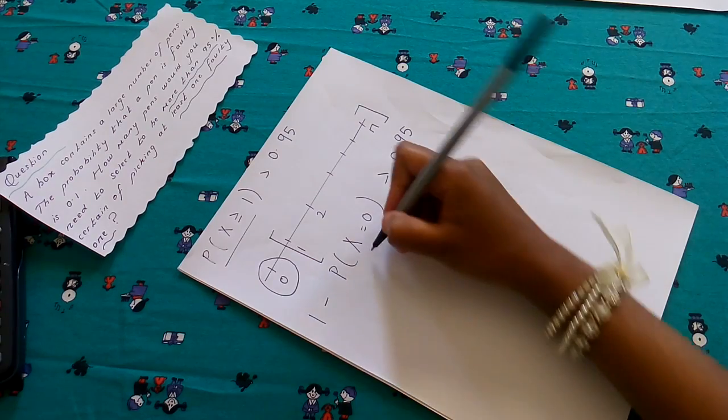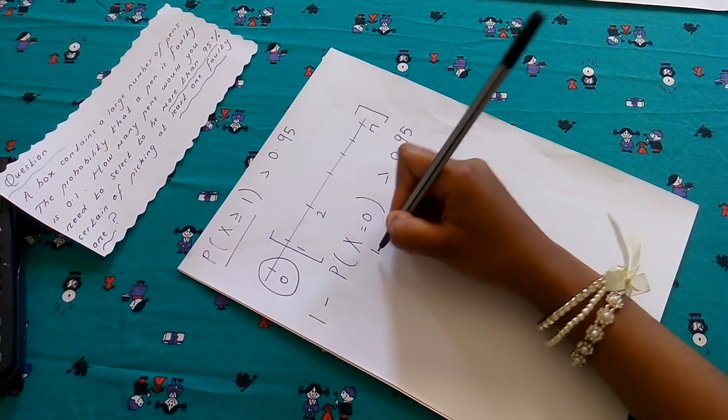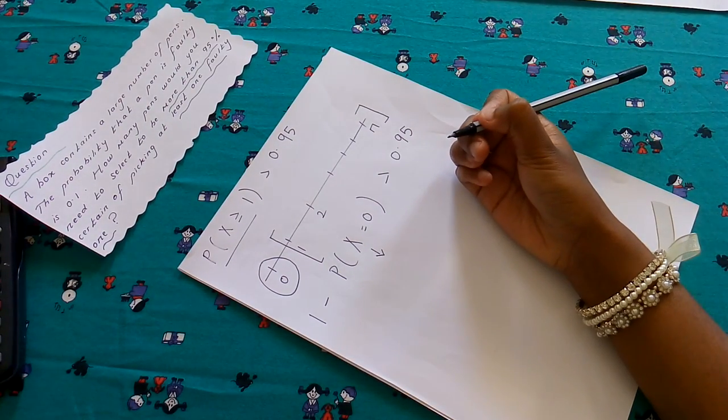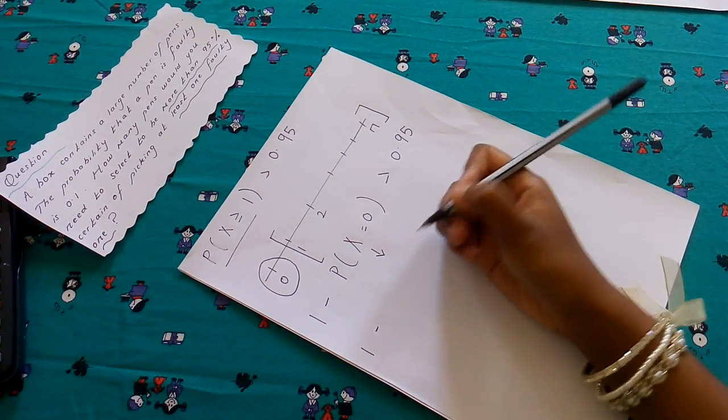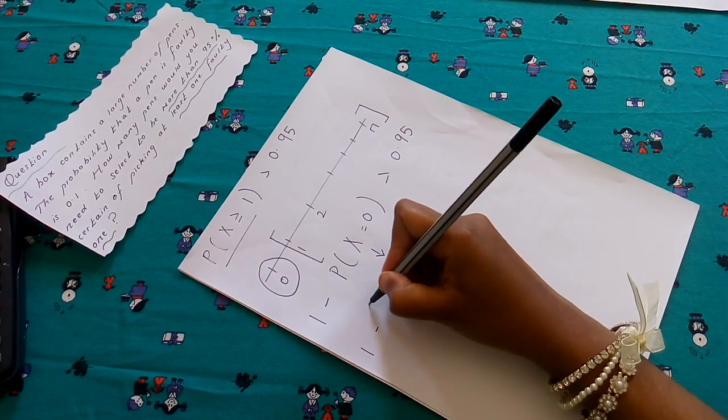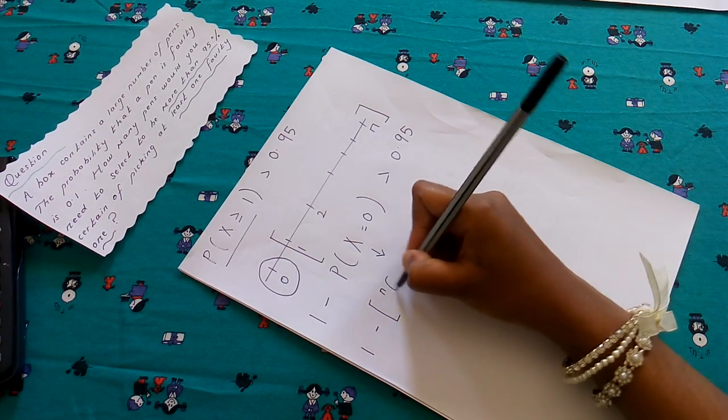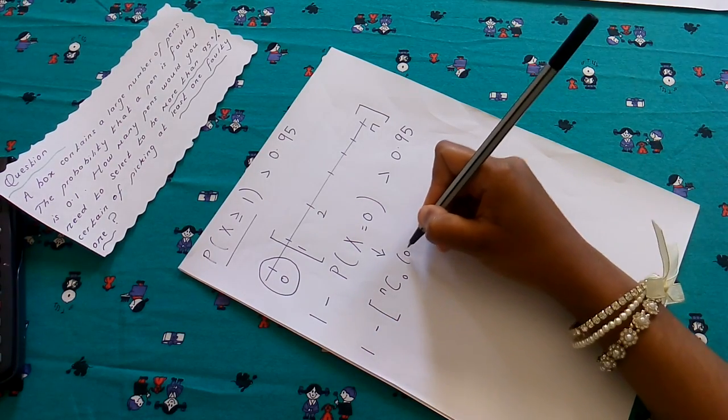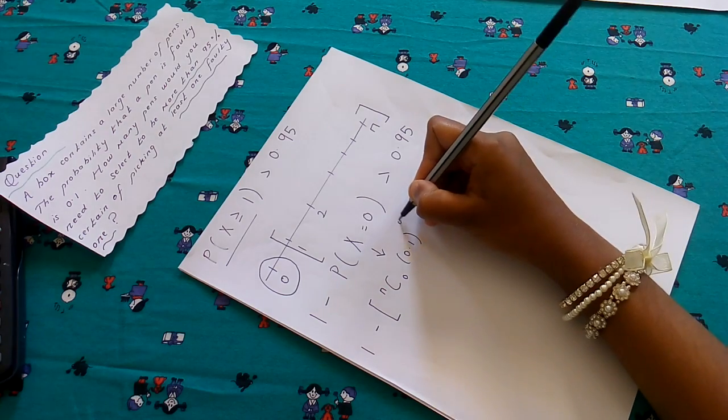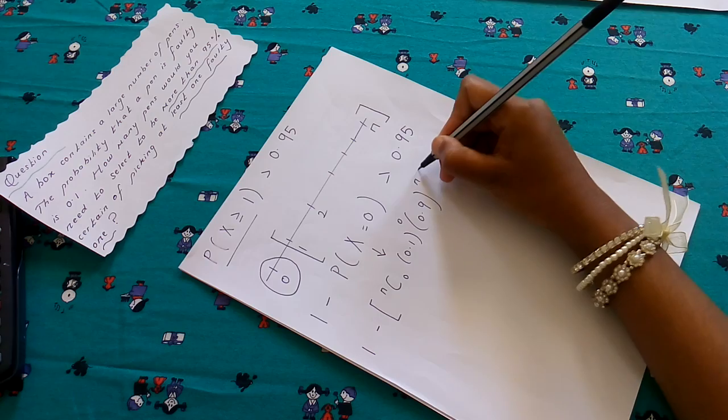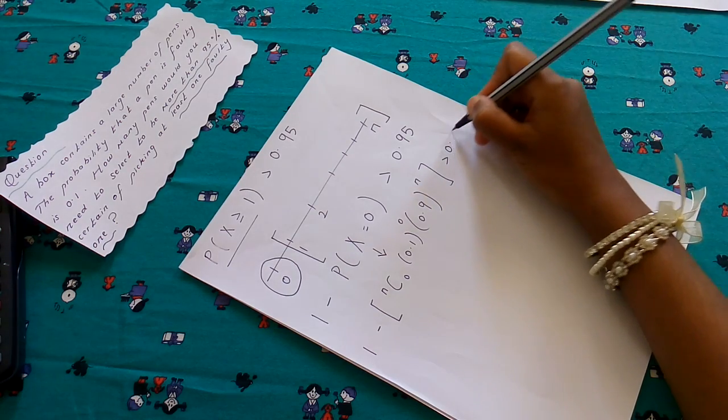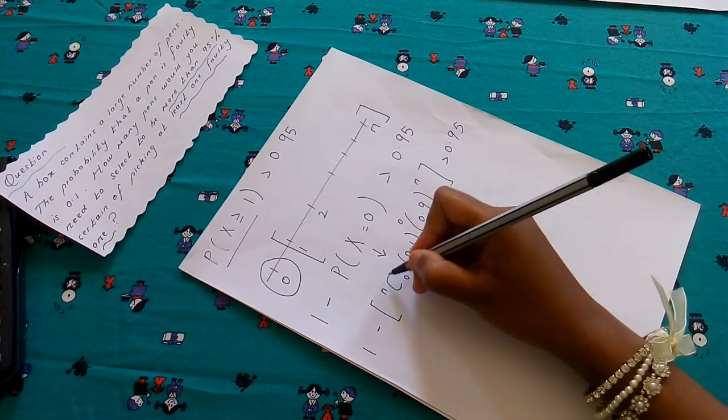Next step is we need to rewrite this again using the binomial model. It's simply 1 minus nC0 times 0.1^0 times 0.9^n is greater than 0.95.